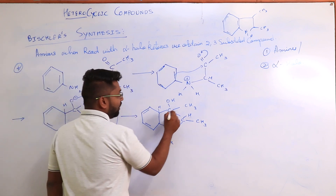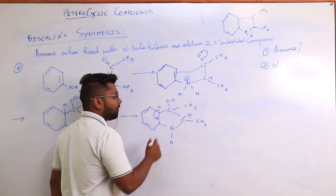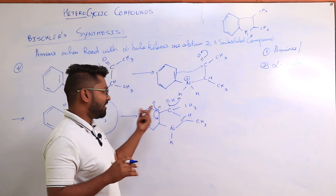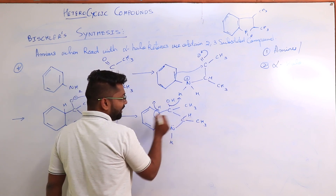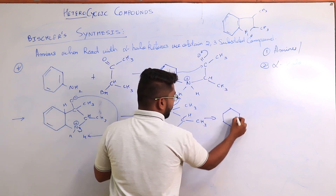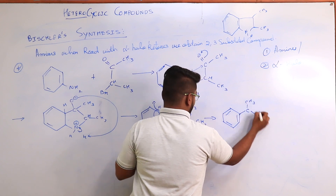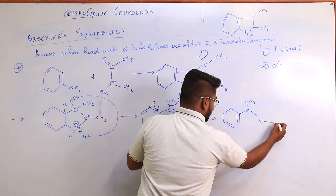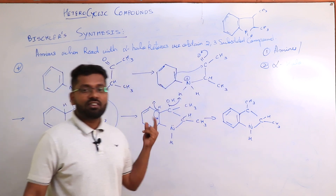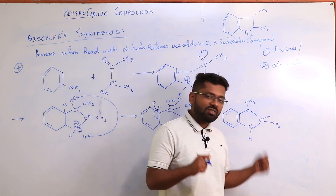Carbon has four bonds — there is a hydrogen atom attached to this carbon as well. Now here you have a single bond; this hydrogen will form a bond with this carbon making it a double bond. This H+ will go out with OH minus, and OH will again form a double bond. A double bond is forming, H and OH are leaving, giving: benzene, a double bond, CH3, another CH3, and N-H.